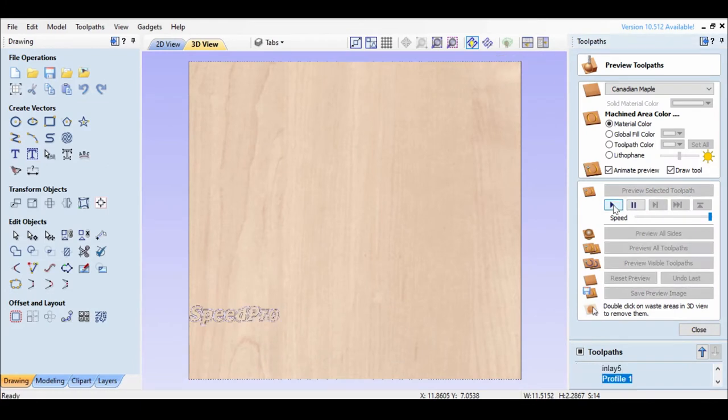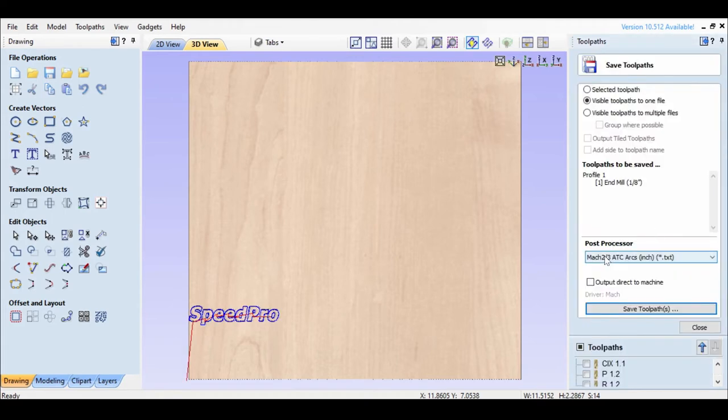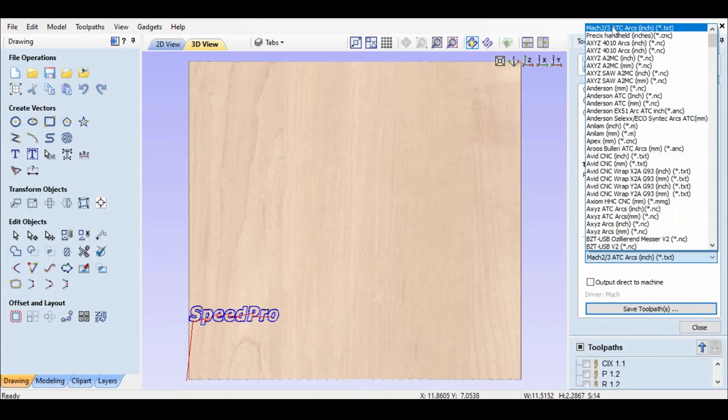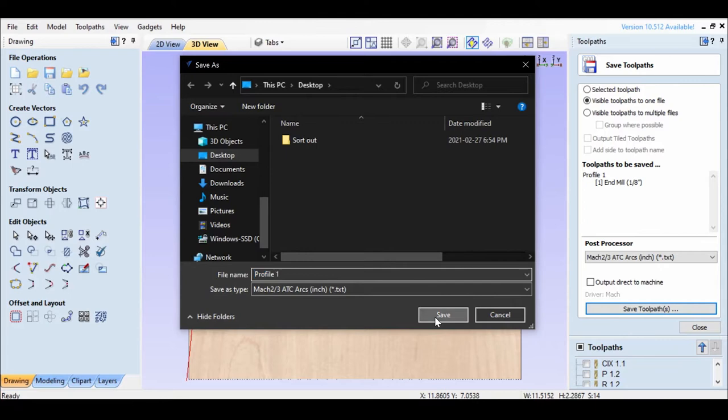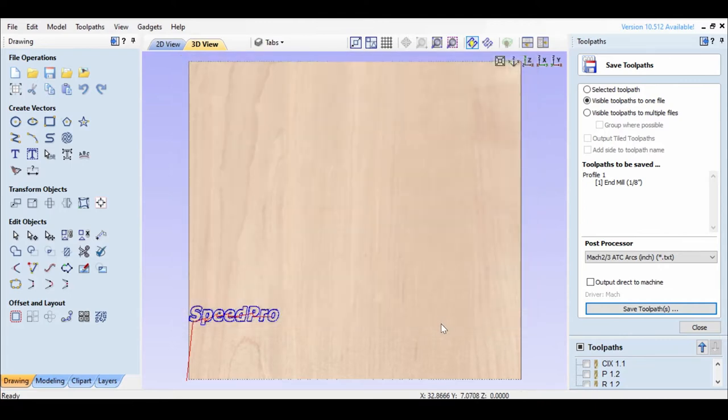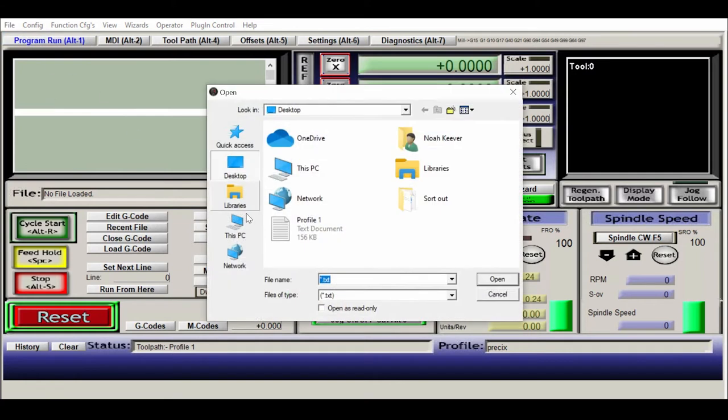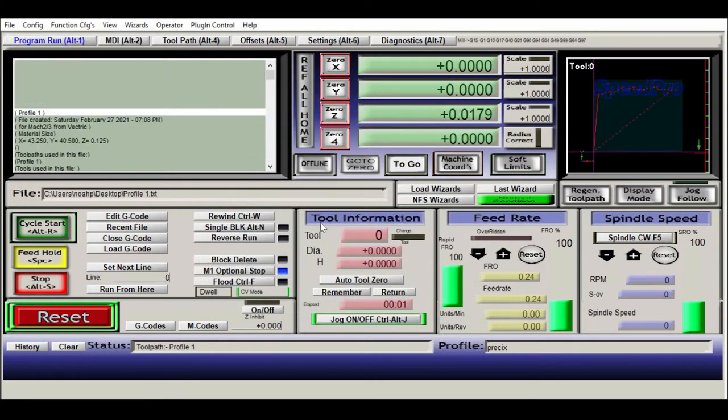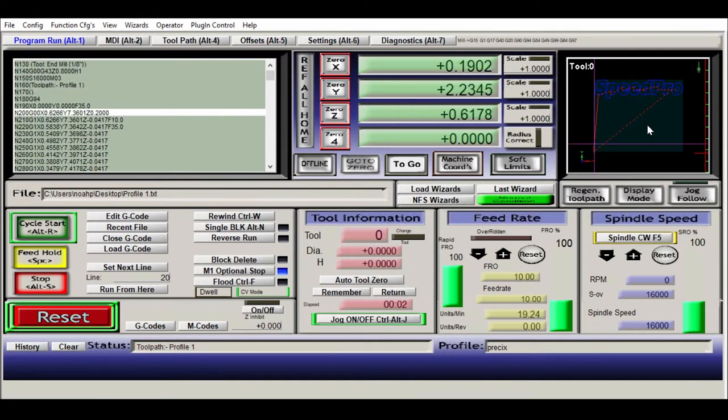Run a simulation if you want, and easily export the gcode to Mach3 or a different controller by selecting the right post processor from the list. Now, let's go to Mach3 and load the gcode that we just generated. And if we already set the X, Y and Z origin, we can just hit cycle start.